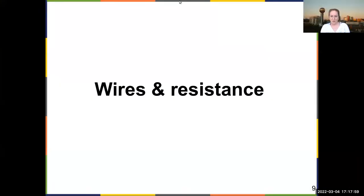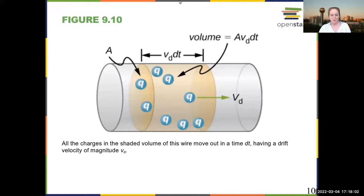Now we're going to be talking about wires and resistance. We often talk about ideal wires as if they had no resistance at all. Resistance is the tendency of materials to not have charge going through them.